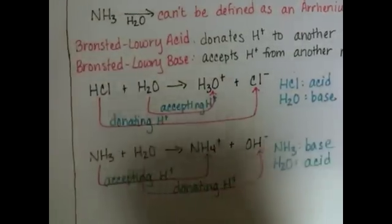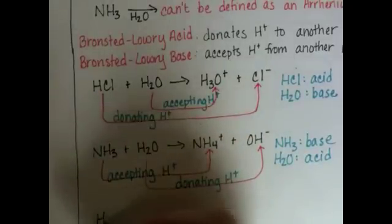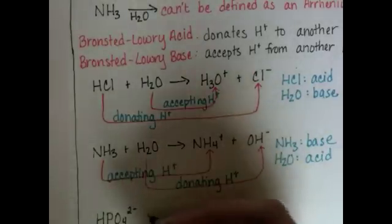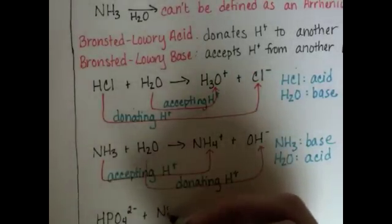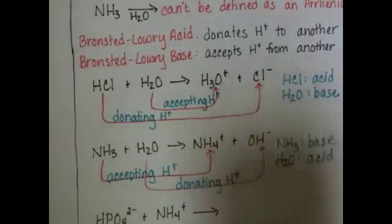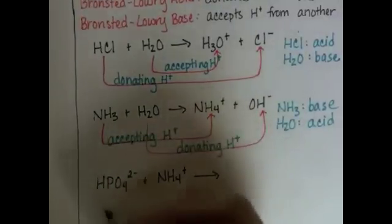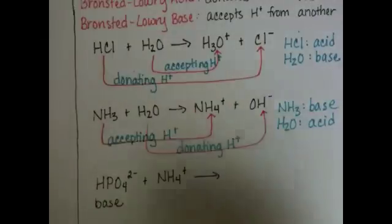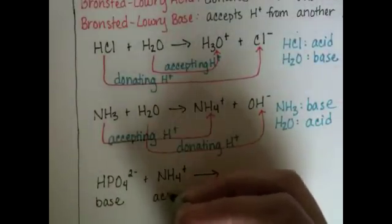Our last example is going to be hydrogen phosphate, HPO4^2- with ammonium, NH4+. I'm going to do this one differently. I'm going to tell you that hydrogen phosphate is the base, and ammonium is the acid.